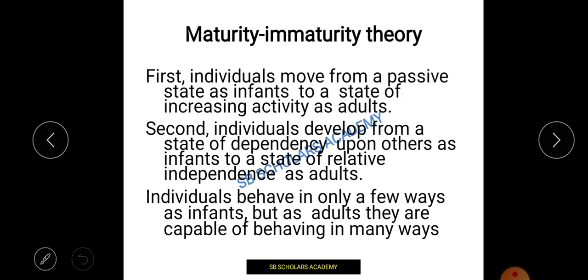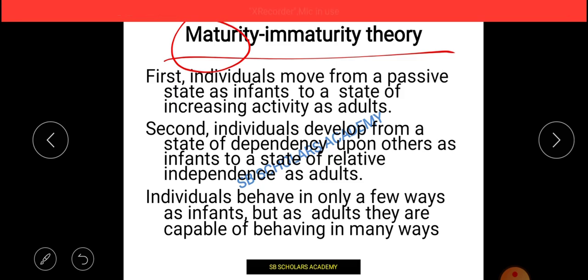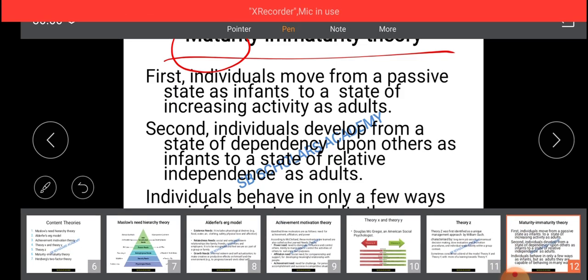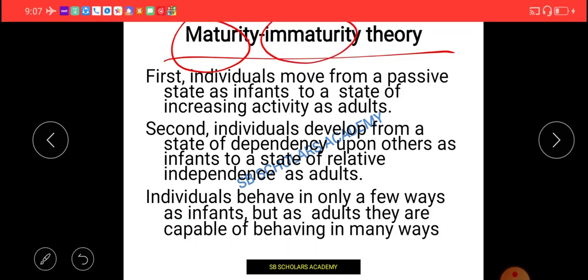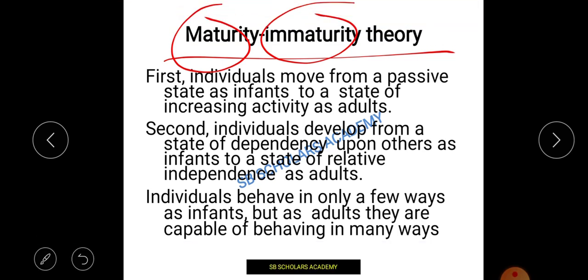Next is Maturity and Immaturity Theory. Maturity happens when an infant becomes an adult. An immature child does not know what is right or wrong until the parents guide them. In the maturity-immaturity theory, we see that the individual first goes through a passive stage as an infant and gradually increases activity as they move toward adulthood.